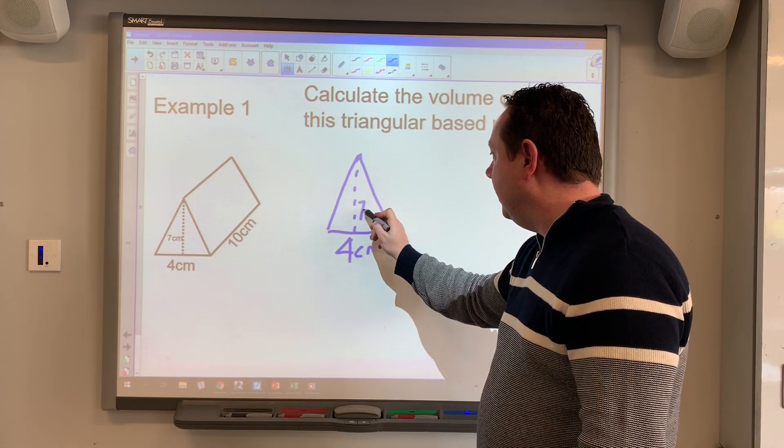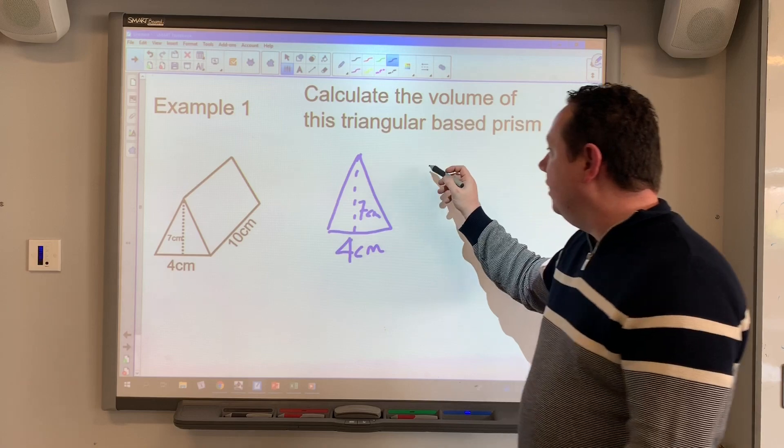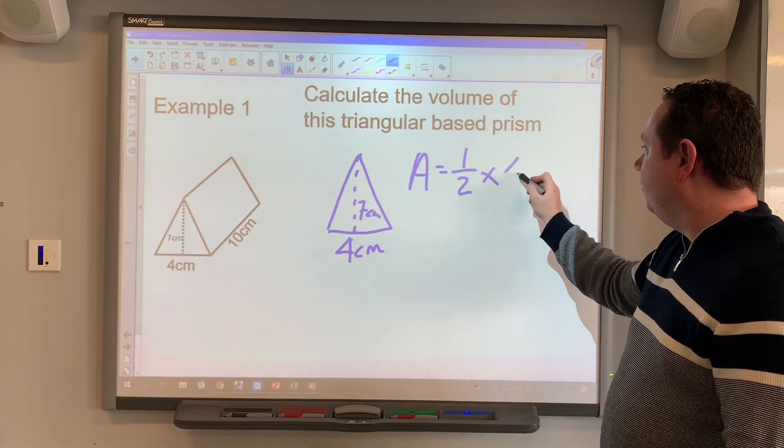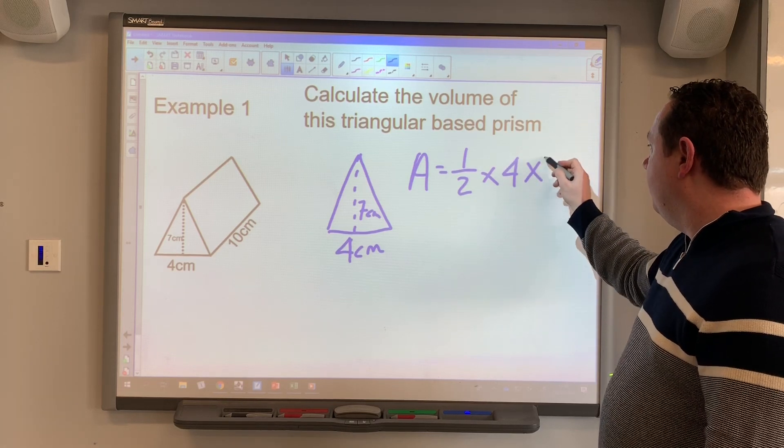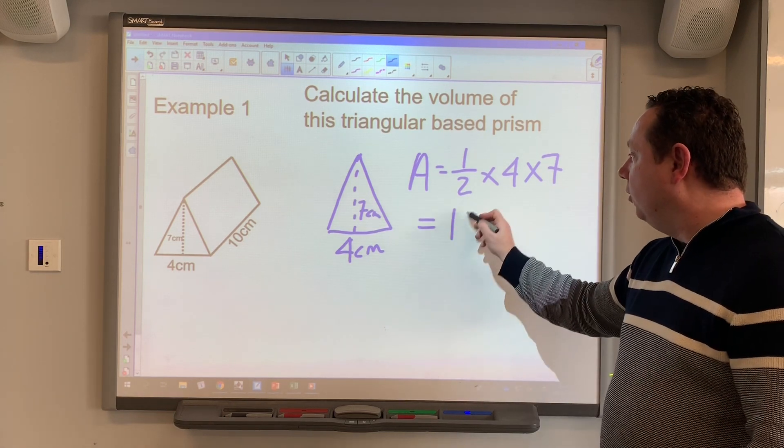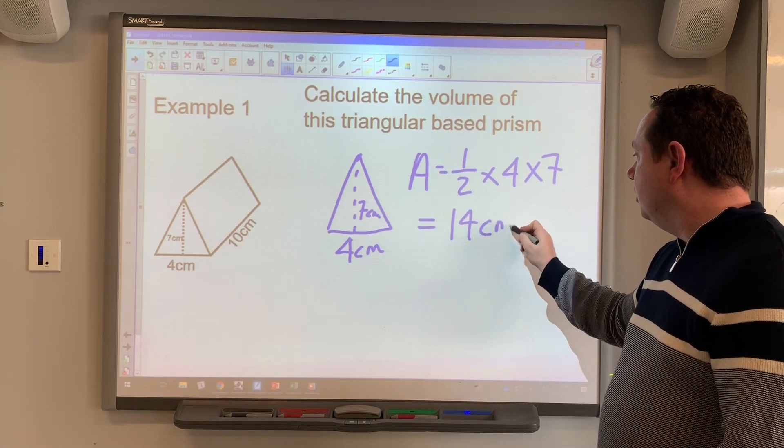And just a reminder, the area of a triangle is a half the base, that's four, times the height, that's seven. Four times seven is 28, half of that gives me 14 centimeters squared.